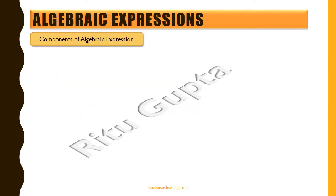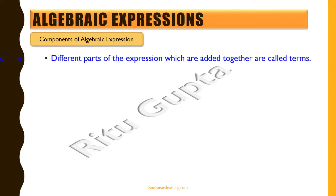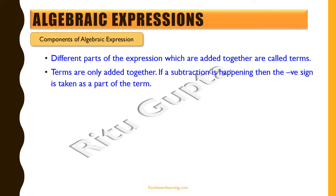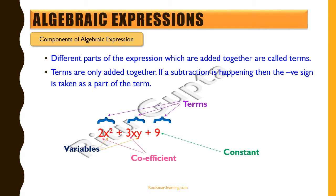Let's now try to understand the different components of algebraic expressions. Different parts of an expression which are added together are called terms. Terms are only added together, so it's very important to understand that even if you see a subtraction happening, the negative sign is actually taken as part of the term — so we say a positive term and a negative term are added together. For example, in 2x² plus 3xy plus 9, there are three terms: 2x² is one term added to 3xy, which is added to 9.